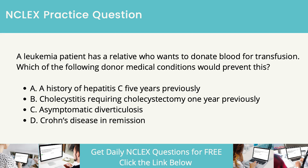A leukemia patient has a relative who wants to donate blood for transfusion. Which of the following donor medical conditions would prevent this? A history of hepatitis C 5 years previously. Cholecystitis requiring cholecystectomy 1 year previously. Asymptomatic diverticulosis. Crohn's disease in remission.